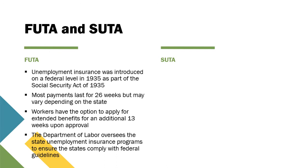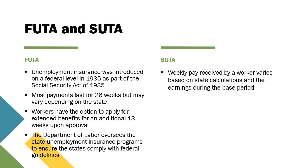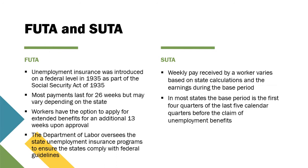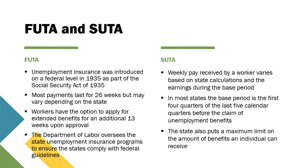FUTA weekly pay received by a worker varies based on state calculations and earnings during the base period. In most states, the base period is the first four quarters of the last five calendar quarters before the claim of unemployment benefits. The state also puts a maximum limit on the amount of benefits an individual can receive.